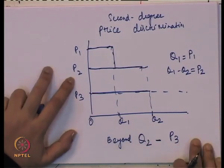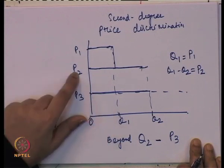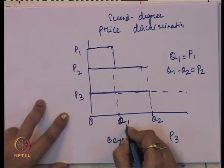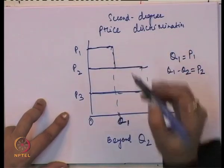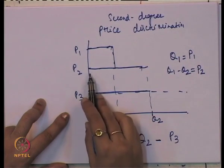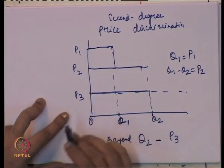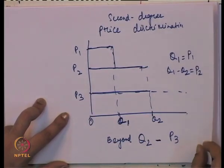Here it is not on the basis of a price that we identify a quantity; rather, on the basis of output range: for 0 to Q1 amount of output, price has to be P1; for Q1 to Q2, price has to be P2; and beyond Q2, price has to be P3. So the price discrimination here is on the basis of quantity rather than price.